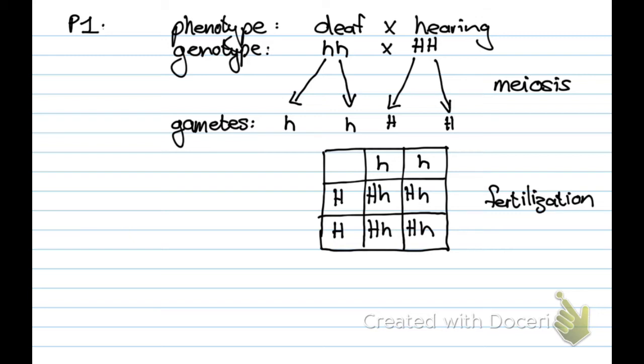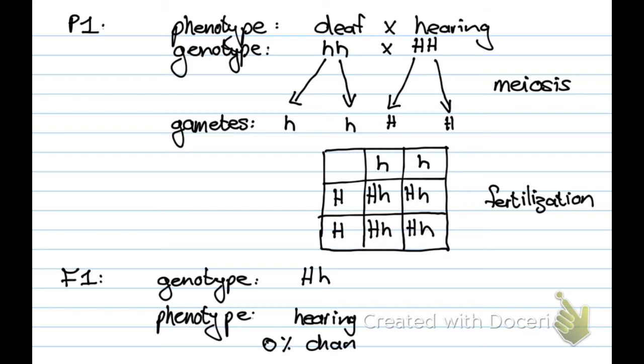Right and then we can go on to the F1 generation. We're going to now start with the genotype because that's what we just calculated. If you look at the F1 generation there's only one genotype which is heterozygous. And then we have the phenotype. And there's only one type which is hearing. And this means that there is zero percent chance for them to have a child that is deaf.